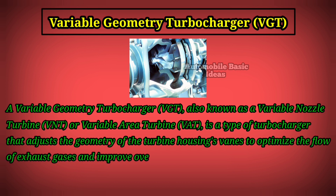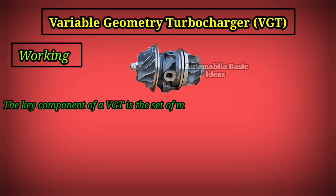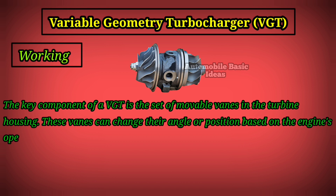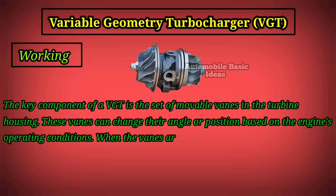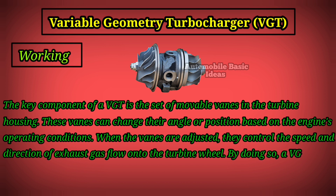Working: The key component of a VGT is the set of movable vanes in the turbine housing. These vanes can change their angle or position based on the engine's operating conditions. When the vanes are adjusted, they control the speed and direction of exhaust gas flow onto the turbine wheel.